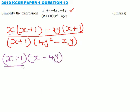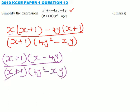Divide by x plus 1 in the numerator, and 4y squared minus xy. So x plus 1 and x plus 1, we'll divide and get equals to 1.